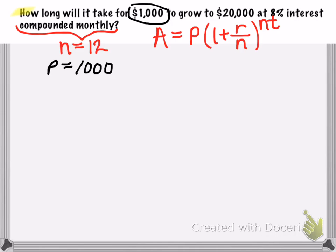And then on this problem, we're solving for how long it takes for this $1,000 to grow. So we're solving for time. So t is going to be the unknown in the problem.